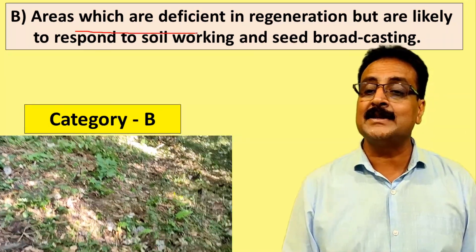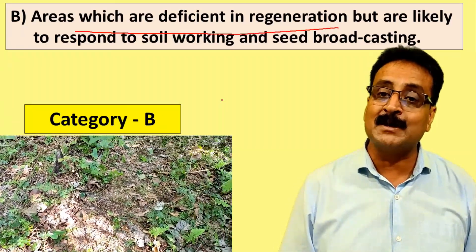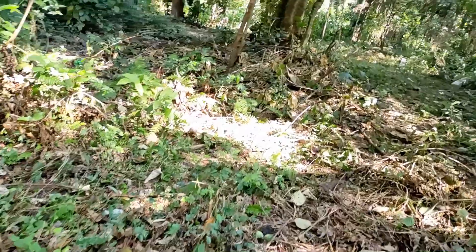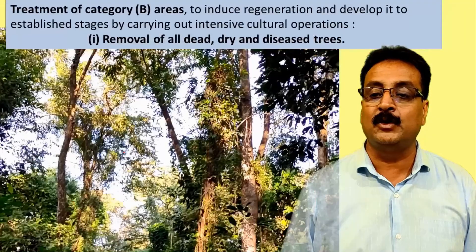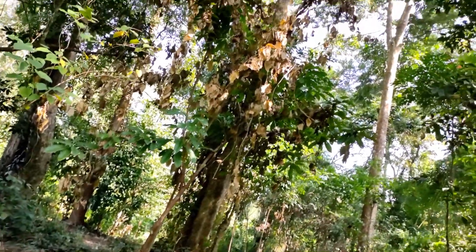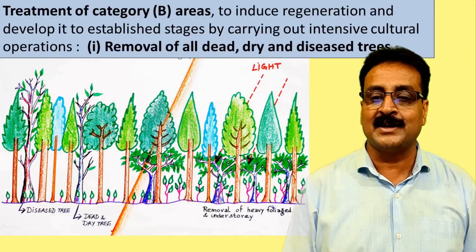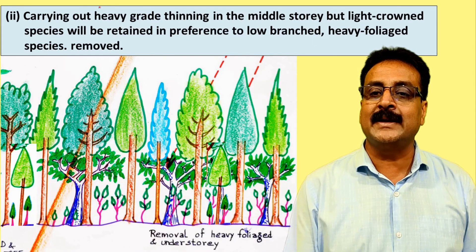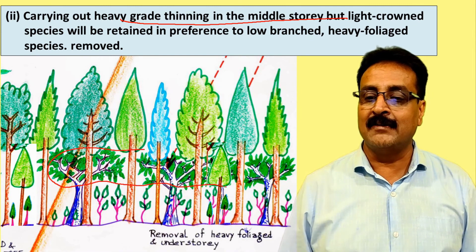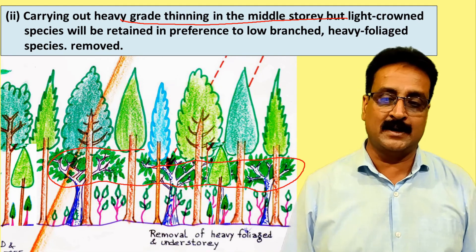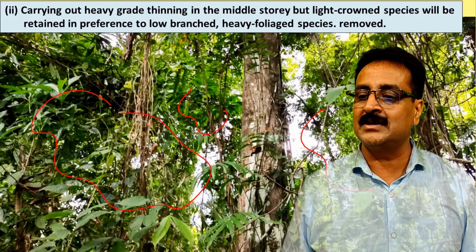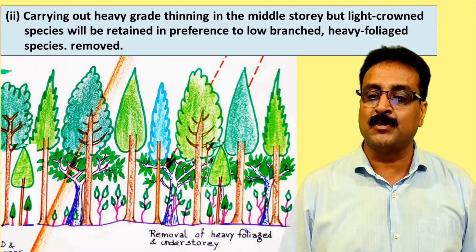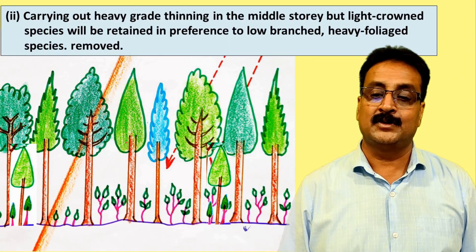Category B is similar to Category A but applies to areas with a deficit of regeneration - no regeneration at all. Here we will do soil working and broadcasting. The first step is removal of dead, dying, and diseased trees to open up the canopy. The next step is carrying out heavy grade thinning in the middle story - removing heavy branching and foliage - and removing all understory so that light can penetrate.